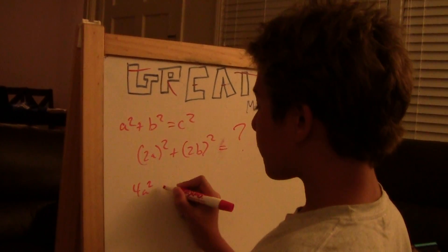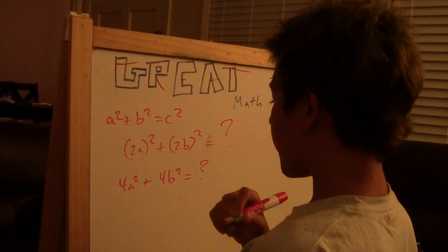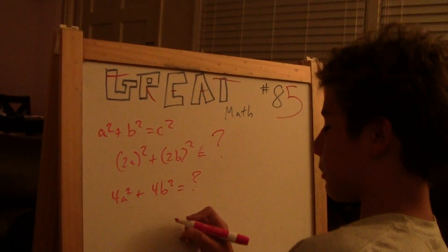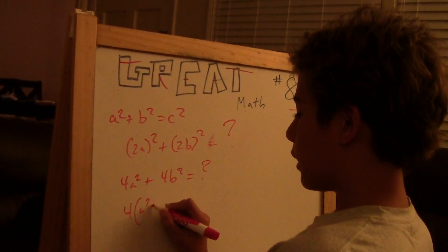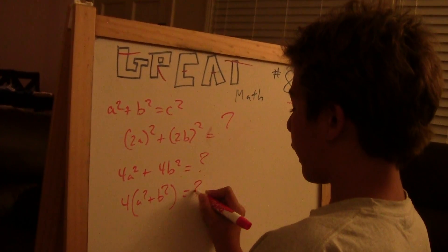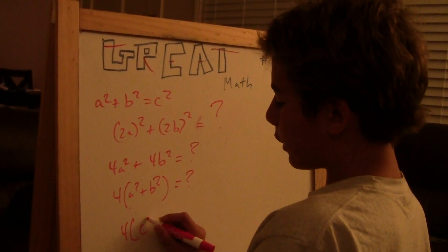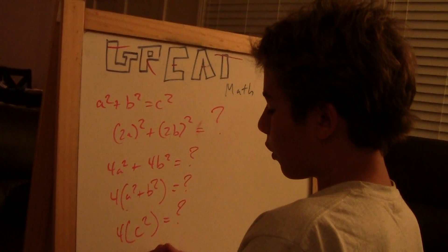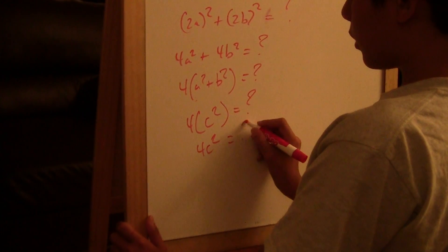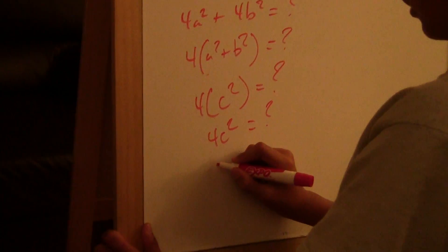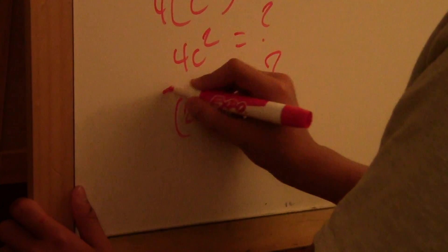That was part A of the problem. Now for part B. Given that a, b, and c is a Pythagorean triple, is 2a, 2b, 2c also a Pythagorean triple? How about na, nb, nc where n is a positive integer? If you missed that, please rewatch. Otherwise, read along.